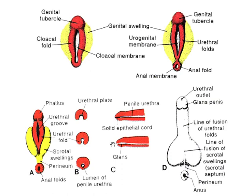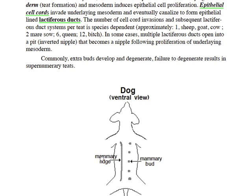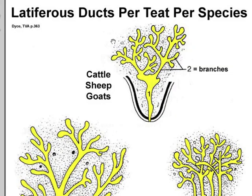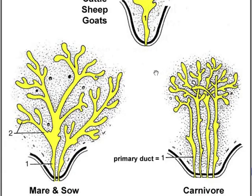Although they are not genital organs, mammary glands are associated with reproduction. In both genders, ectoderm forms bilateral ridges that regress, leaving behind mammary buds, each of which becomes a mammary gland. Mammary glands are formed by epithelial cord invasions into the underlying mesoderm; the solid cords canalize and each becomes a lactiferous duct. The number and location of mammary buds and the number of lactiferous ducts per mammary gland varies with the species. Ruminants have one large lactiferous duct per teat, mares and sows have two, and carnivores as well as women have multiple lactiferous ducts per teat.